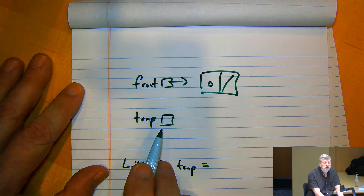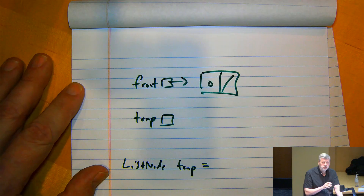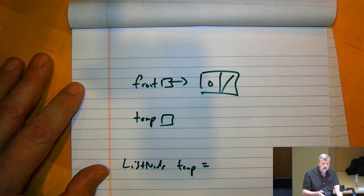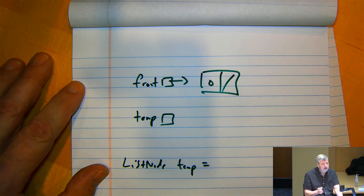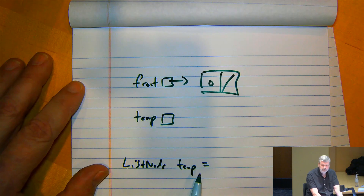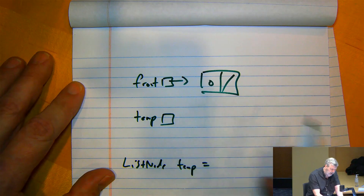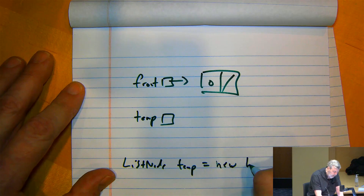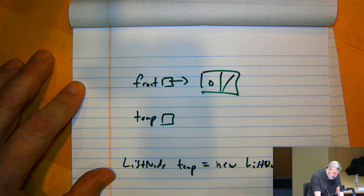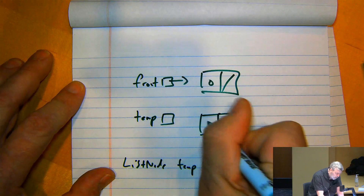If we've got our list that has zero in it, and we're going to construct a node storing one, we want a new ListNode with one in it. What should its link be? We want this node to point at the node with zero, and front has the reference to that node. So we'd set temp to be a new ListNode with one and front — that copies the arrow so the new node points at the zero node.